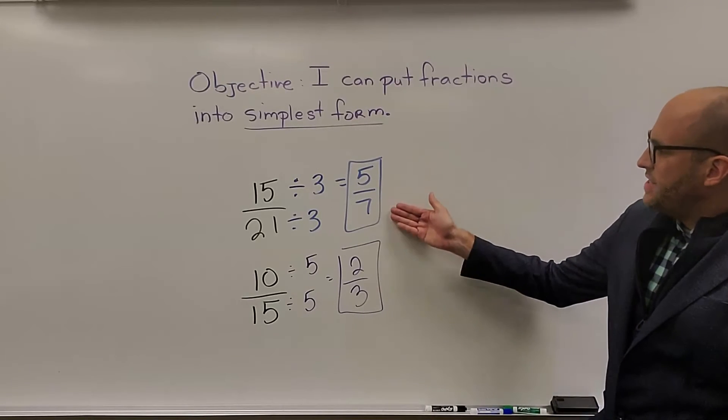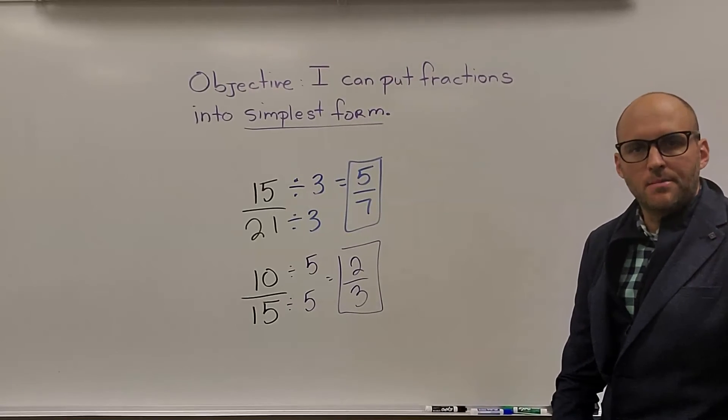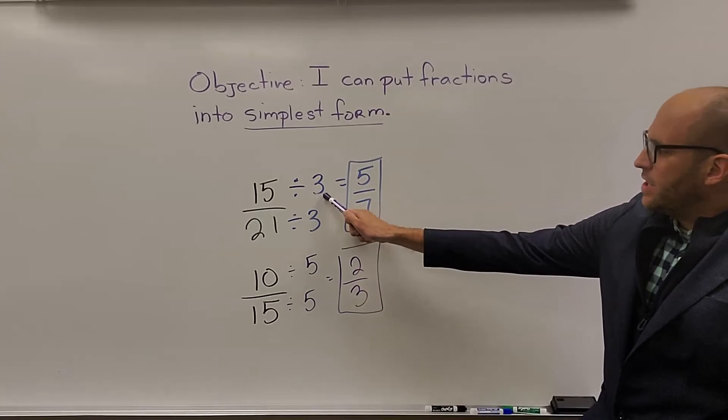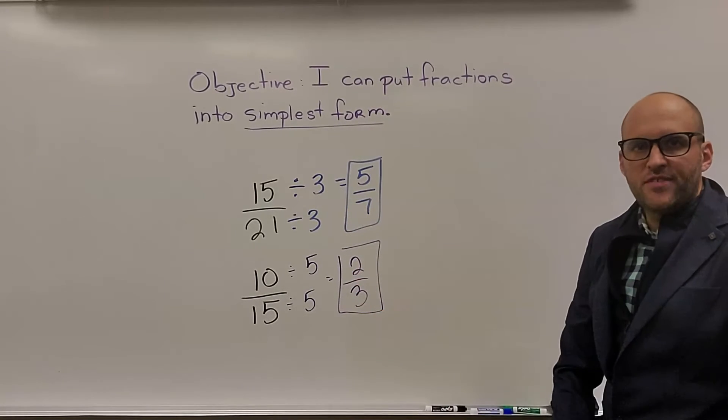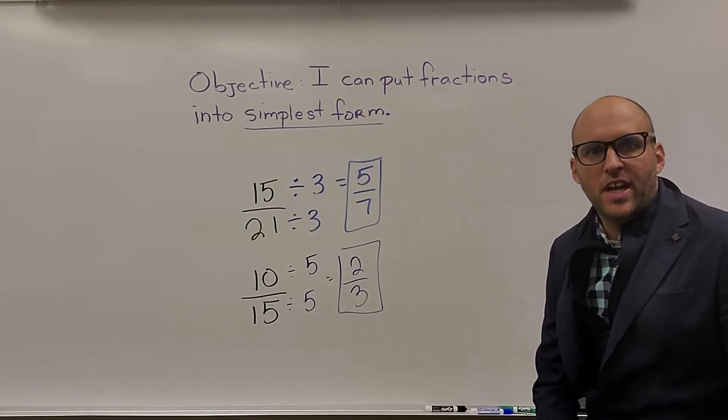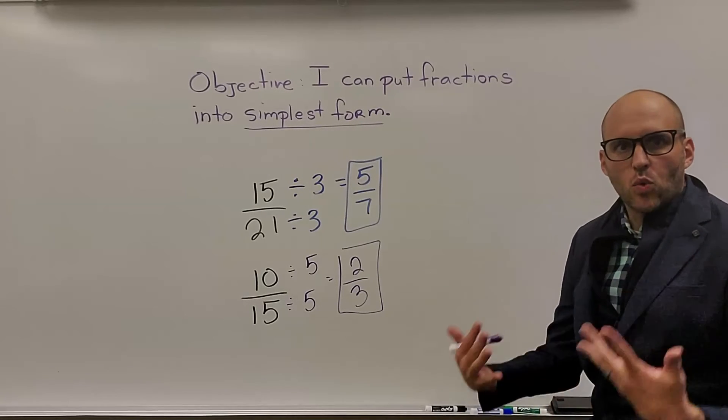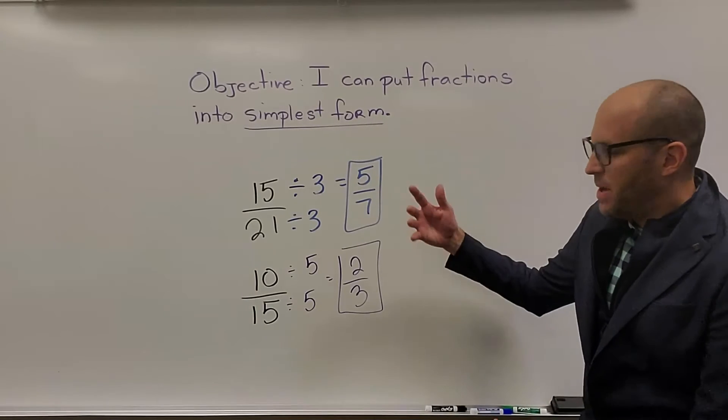Hopefully you came up with 5 sevenths for the top problem and 2 thirds for the bottom problem. The greatest common factor was 3 in the first problem. Second problem was 5. So again, knowing your multiplication facts, being able to figure out the greatest common factor really is the trickiest part of this. As you get better, this becomes quicker.